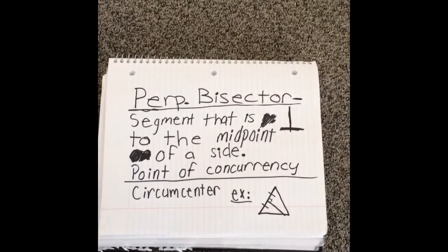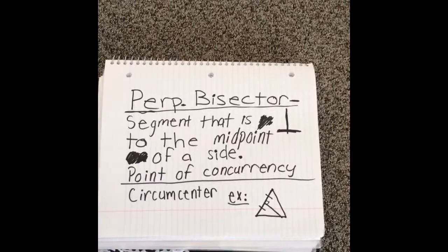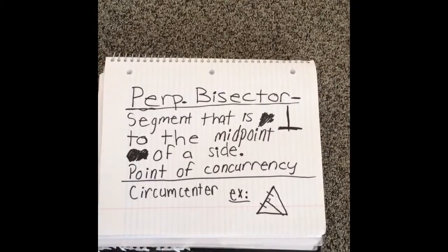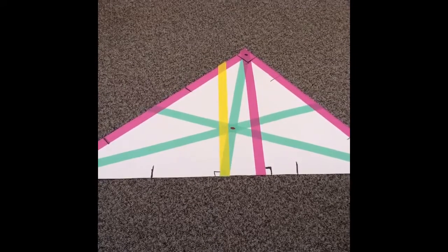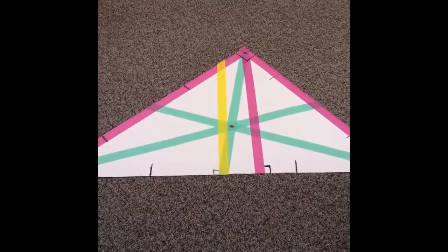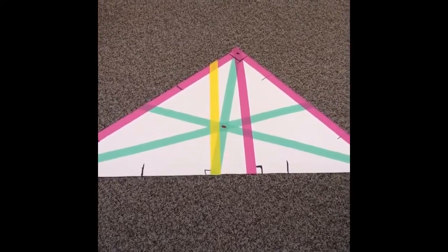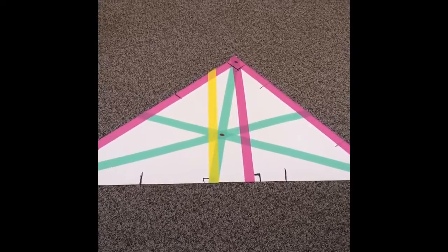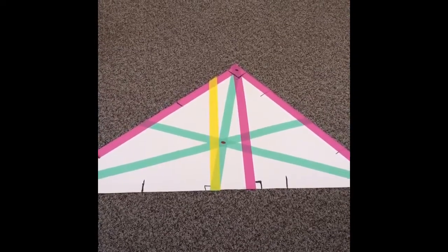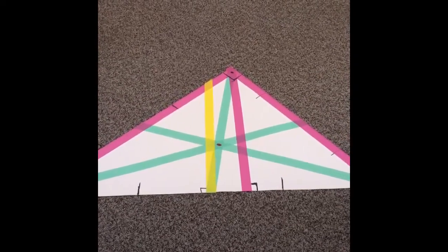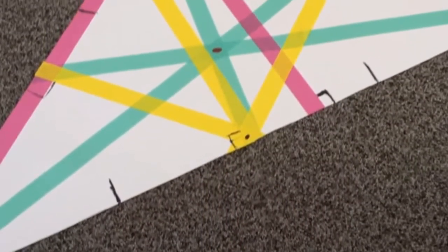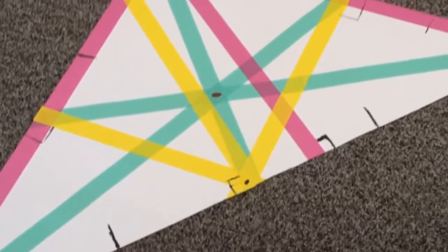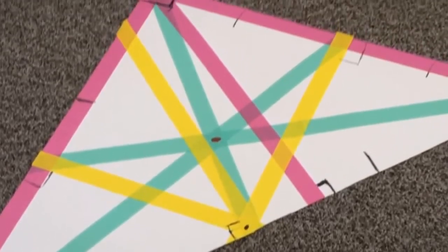A perpendicular bisector is a segment that is perpendicular to the midpoint of a side. The point of concurrency is known as the circumcenter. The yellow line represents the perpendicular bisector of the triangle. We know this because the yellow line is placed on the midpoint of the triangle and is perpendicular because of the 90-degree angle symbol on the segment of the triangle. Where all three of the perpendicular bisectors meet is the circumcenter — this is their point of concurrency.